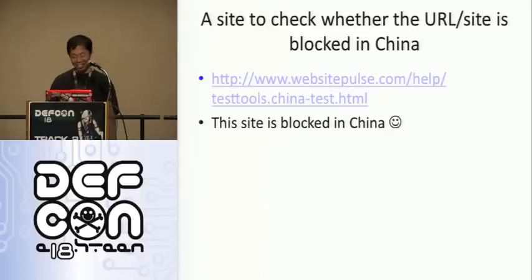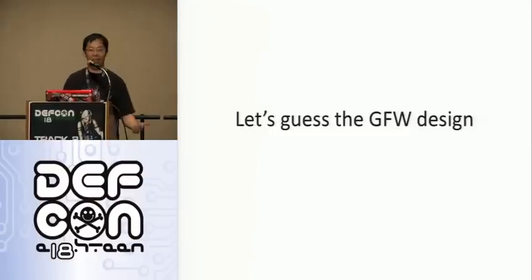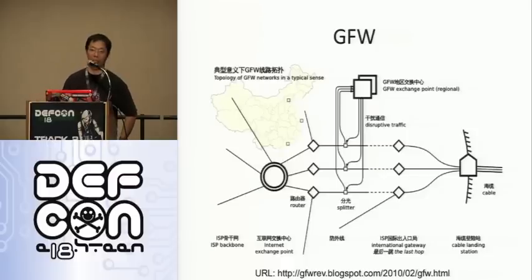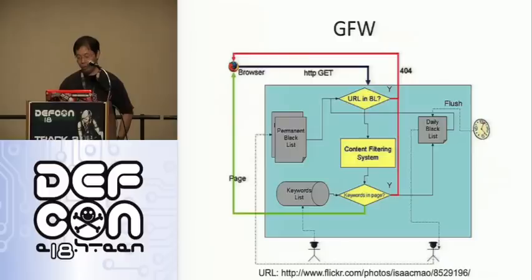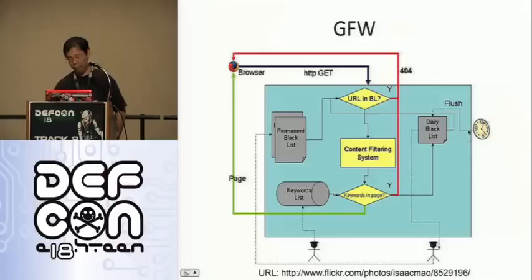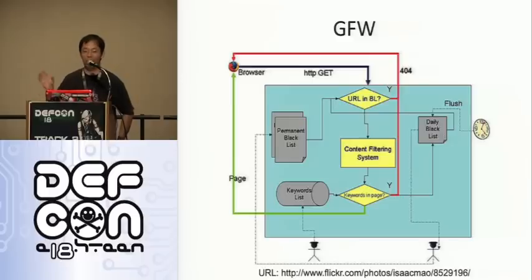Okay, let's talk about the GFW — the Great Firewall, not BMW. This is a GFW diagram, not official, but guessed by researchers. Individual researchers in China have published diagrams like this, but they get taken down within a few days. The GFW has a blacklist, a content filtering system, a keyword list, a permanent blacklist, and many human resources dedicated daily to finding and filtering sensitive words.